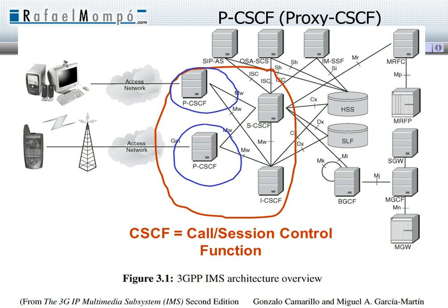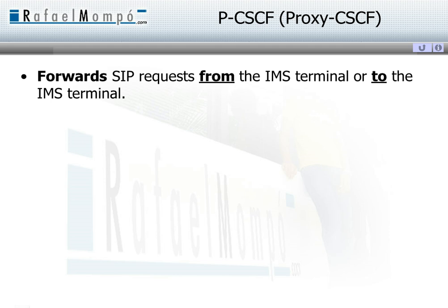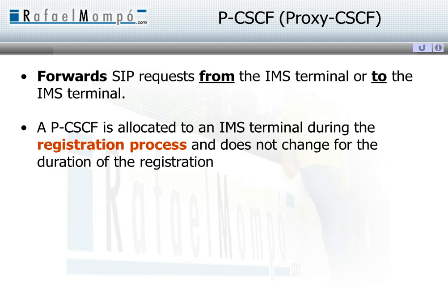The P-CSCF is the proxy. The proxy forwards SIP requests from an IMS terminal to another IMS terminal. SIP is the protocol that terminals use for signaling purposes. There are several proxies in the network, and during the registration process a proxy is assigned to an IMS terminal and it does not change for the duration of the registration.